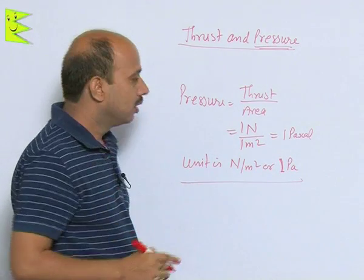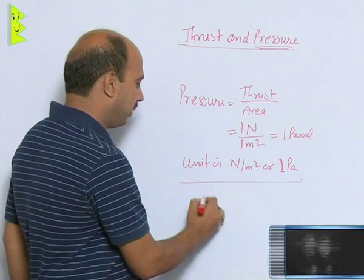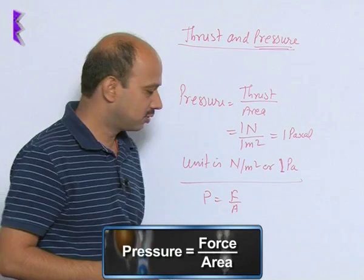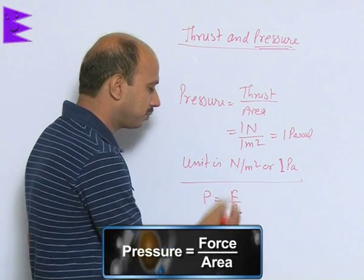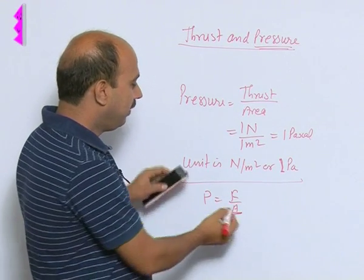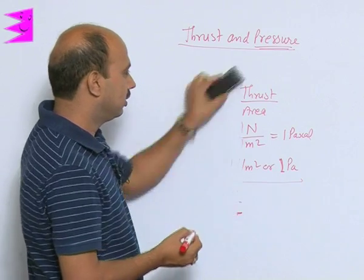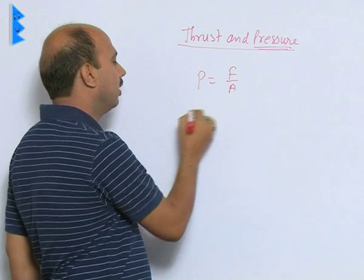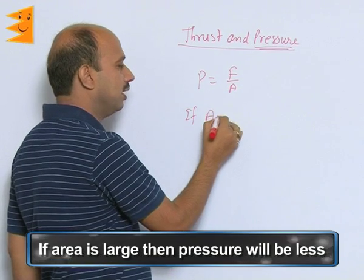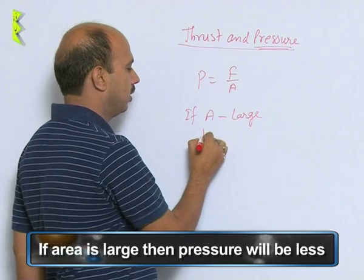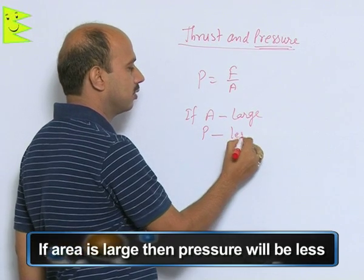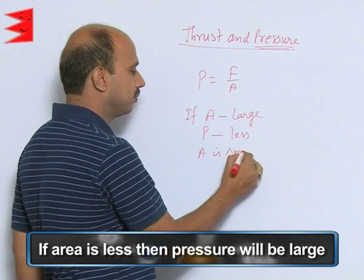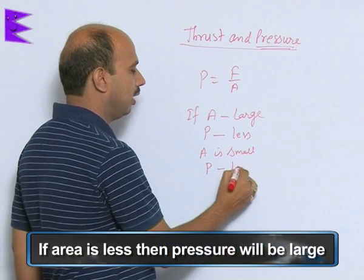Pressure is equal to force upon area, where this force is actually thrust. From here, if area is large, pressure will be less. If area is small, pressure will be large.